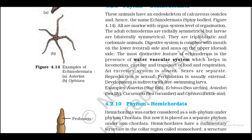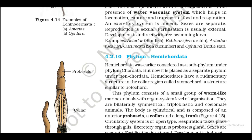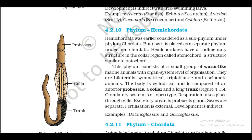The most distinctive feature of echinoderms is the presence of a water vascular system which helps in locomotion, capture and transport of food, and respiration. An excretory system is present. Sexes are separate. Reproduction is sexual. Fertilization is usually external. Development is indirect with free-living larvae. Examples: Asterias (starfish), Echinus (sea urchin), Antedon (sea lily), sea cucumber, and Ophiura (brittle star) — Figure 4.14.